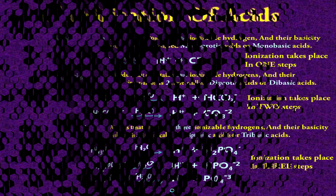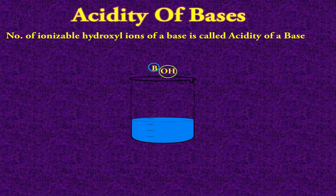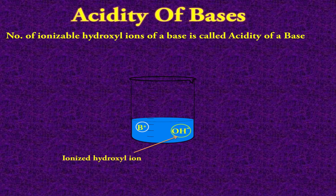Now let's discuss this property with respect to bases — it is known as the acidity of a base. As you know, bases have OH⁻ or hydroxyl ions. So the number of ionizable hydroxyl ions present in any base is called the acidity of that base. The general representation of any base is BOH. According to Arrhenius theory, whenever this base is dissolved in water to make an aqueous solution, it breaks down into ions and produces OH⁻ or hydroxyl ions. The number of OH⁻ ions gives you the acidity value of the base.